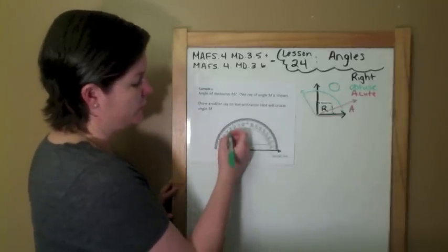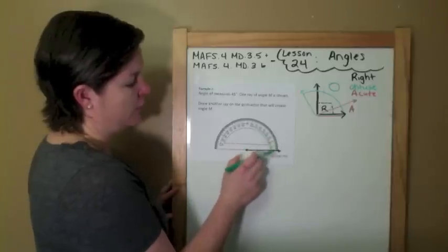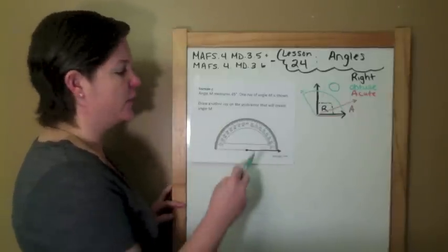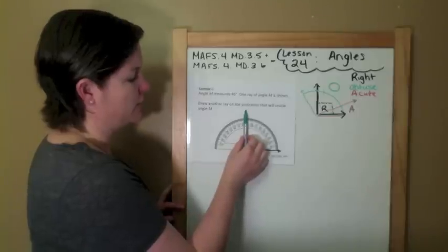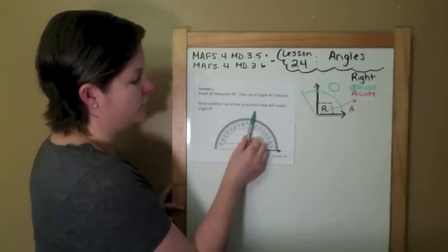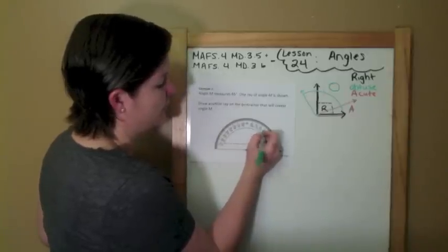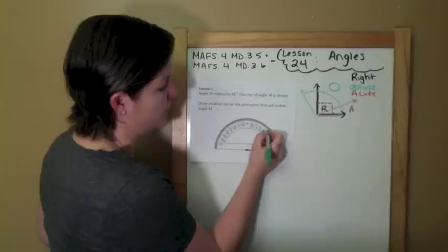So what I see, I see two going up here. I know 45 degrees is less than a right angle. So my right angle would actually be right here. So it's going to be less than. So I'm going to go, here's 40, here's 50, and right in between the two would be 45.